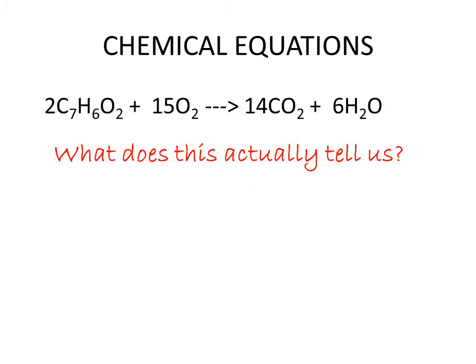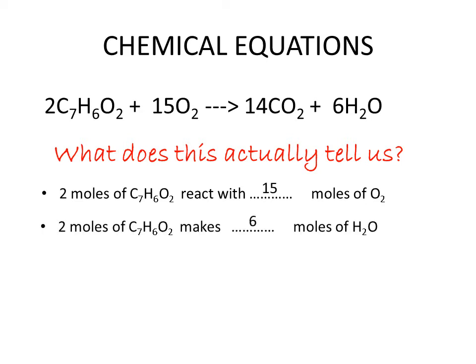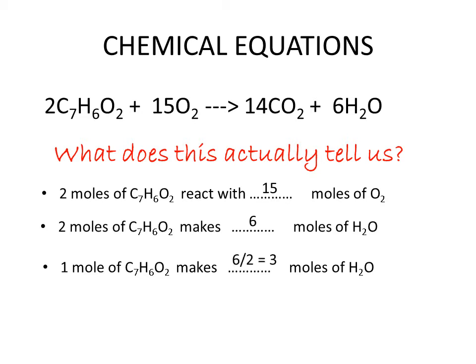Let's try a more complicated equation. If we had two moles of our reactant, you can see from the equation that it needs 15 moles of oxygen to react with, and it will give us six moles of water. If, on the other hand, we only have one mole of the reactant, we take the coefficient of our reactant from the equation and divide it by two. We have to do the same thing to the product we want to calculate, so we divide the coefficient of the water from the equation by two to find out how much water we would actually produce. This is very similar to maths — what you do on one side of an equation, you have to do on the other side.